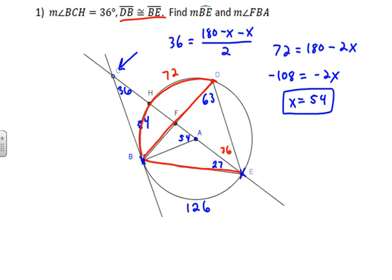We've found arc BE is 126, and we're looking for angle FBA, which is this angle. But unfortunately, we don't know the arc for that inscribed angle, so but we do know this angle is 54°, so if we can find this angle, then we can use what we know about triangles.